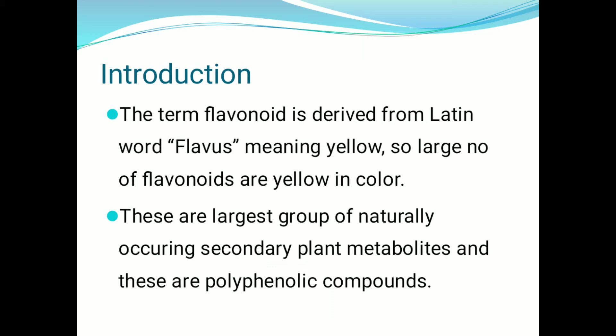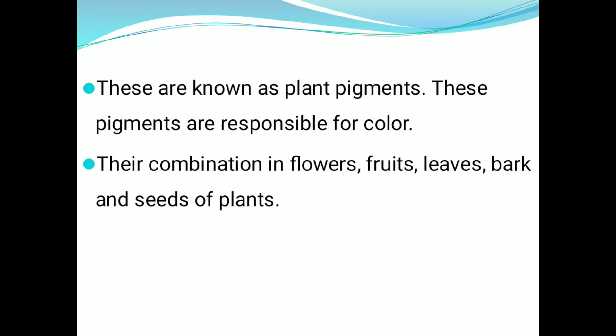Flavonoids are naturally occurring secondary plant metabolites. They are polyphenolic compounds. Examples of flavonoids include quercetin, cyanidine chloride, and kaempferol. Examples of isoflavonoids include genistein, cyanidine chloride, and kaempferol.